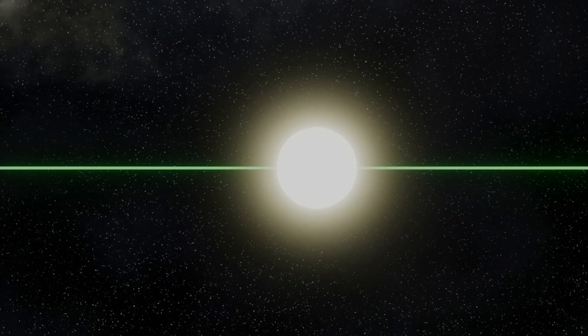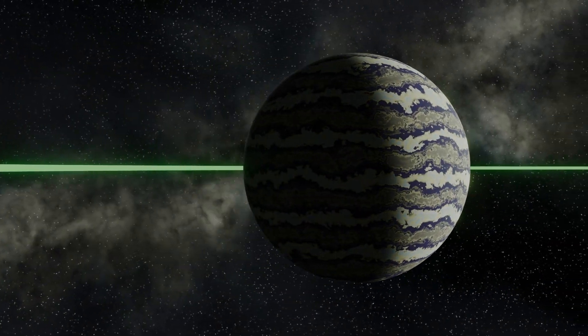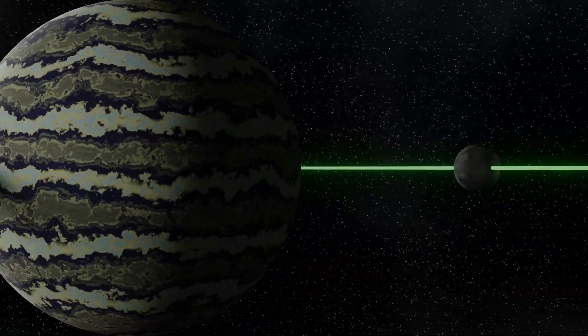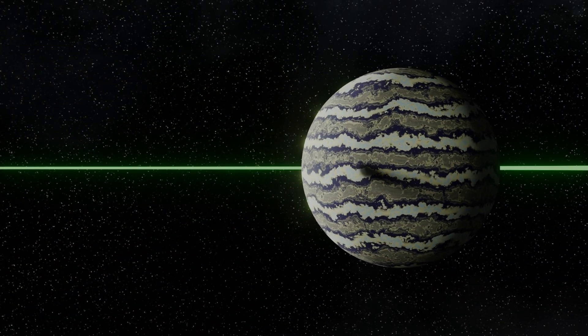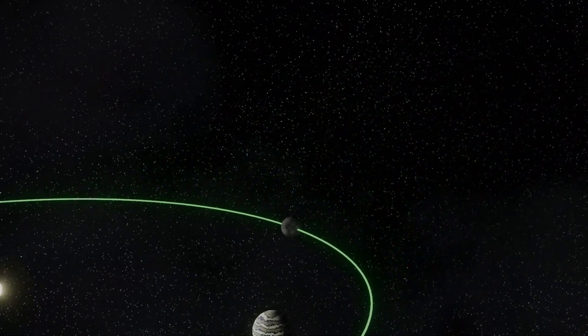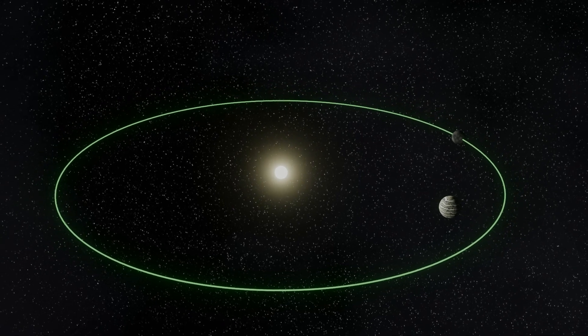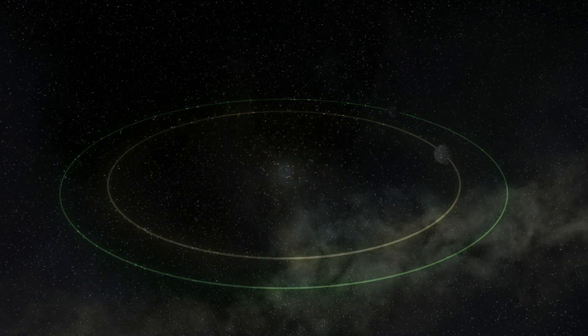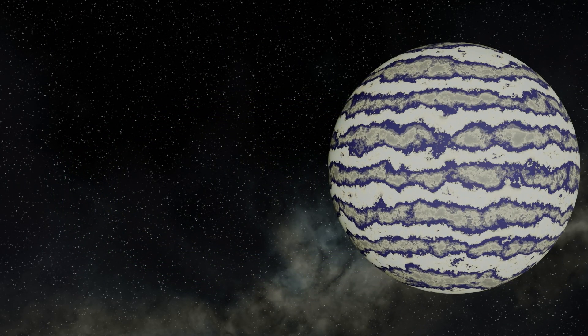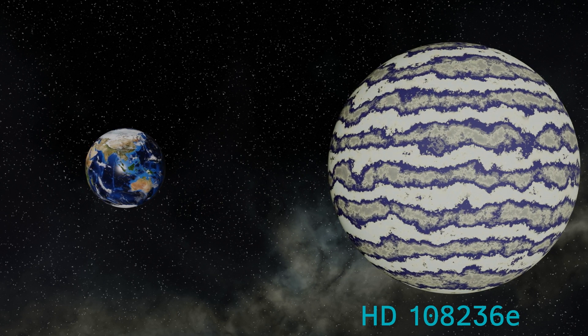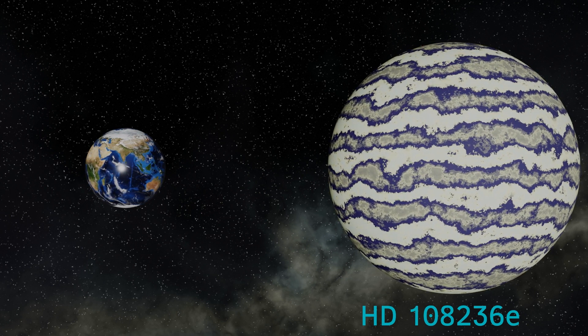So next on in our journey towards the star we come across HD108236e. This orbits the star at a distance of just 21 million kilometres, or 0.14 astronomical units, and it completes one orbit of the star in a period of just 19.6 Earth days. This planet has a radius of 3.12 times that of the Earth, or nearly the same radius as the planet Neptune in our solar system.